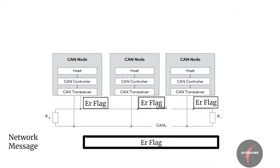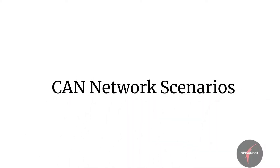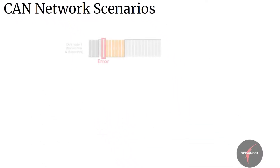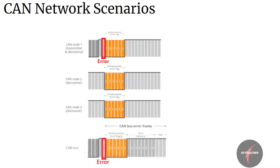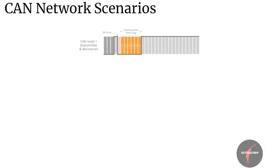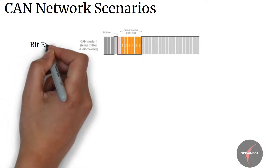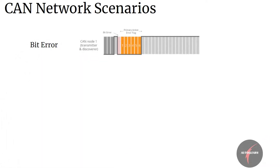Let's look at each scenario that could happen in the CAN network. Consider an error that gets detected by all the nodes at the same time — in this case, the CAN bus will contain only 6 dominant bit error flag and 8 recessive bit error delimiter. Let's look at another scenario where there is a bit error which is detected only by the transmitter ECU of the message.